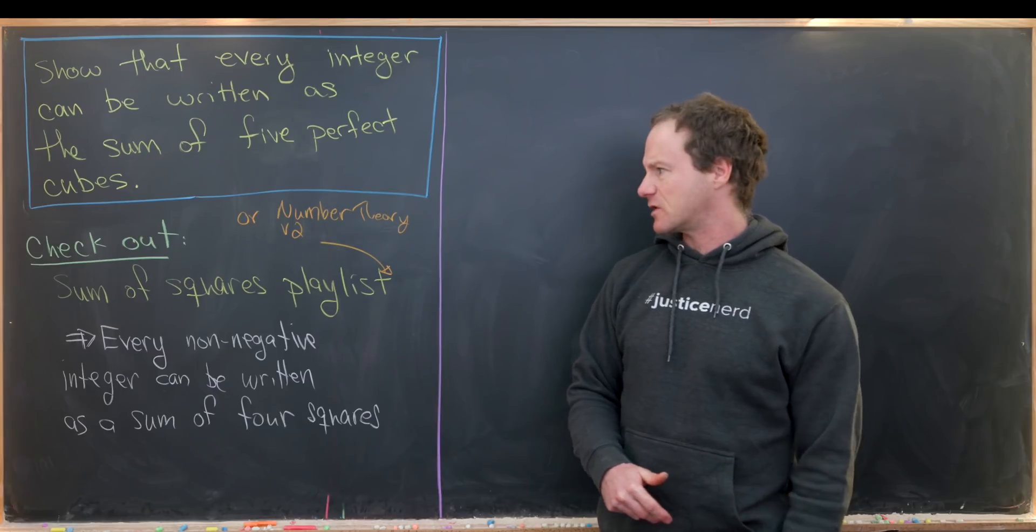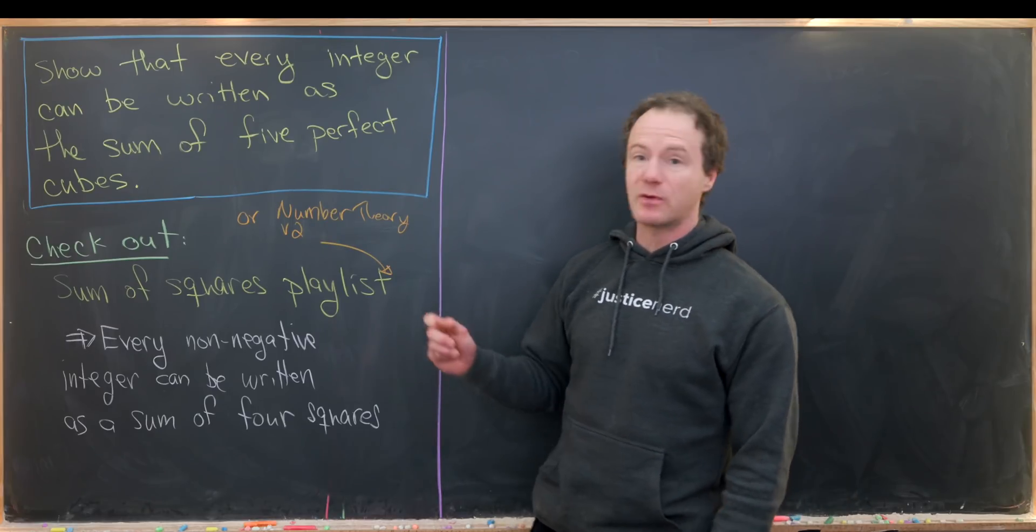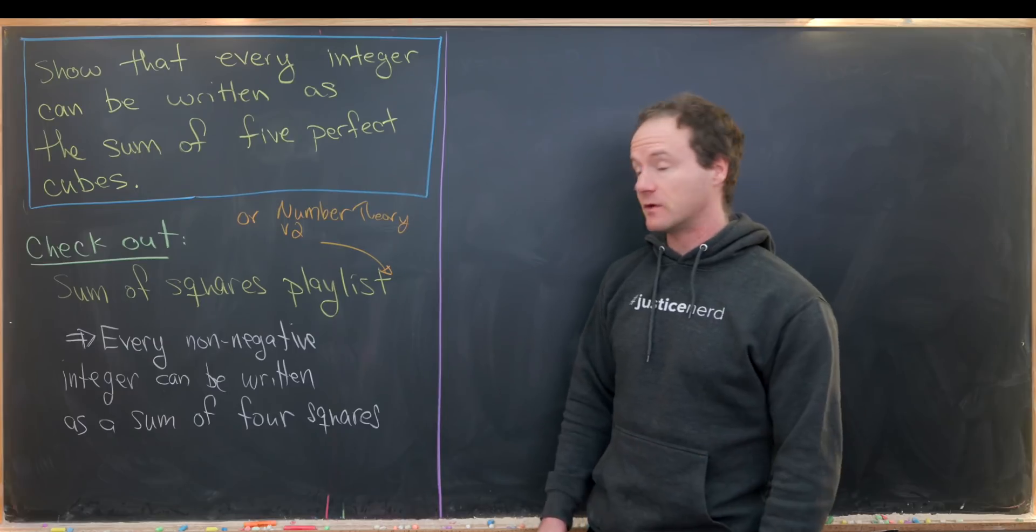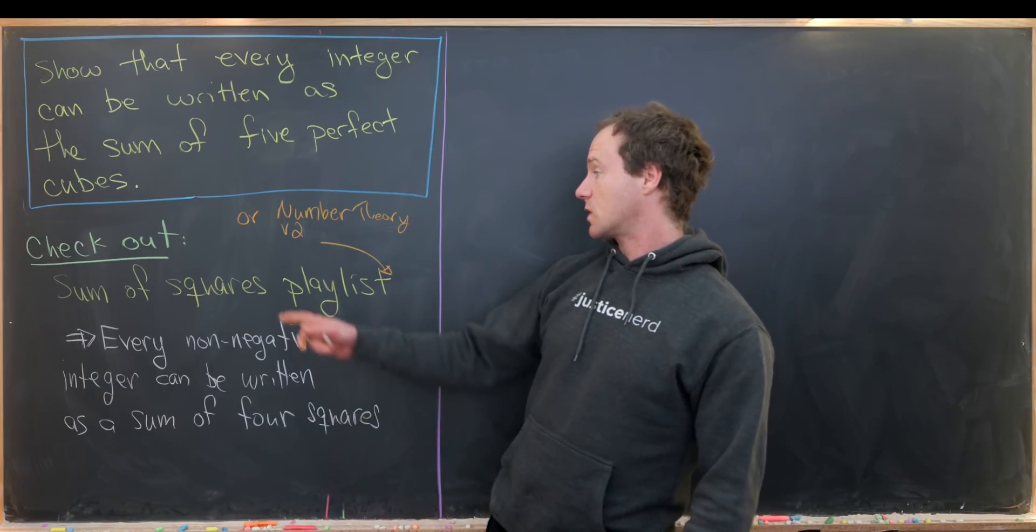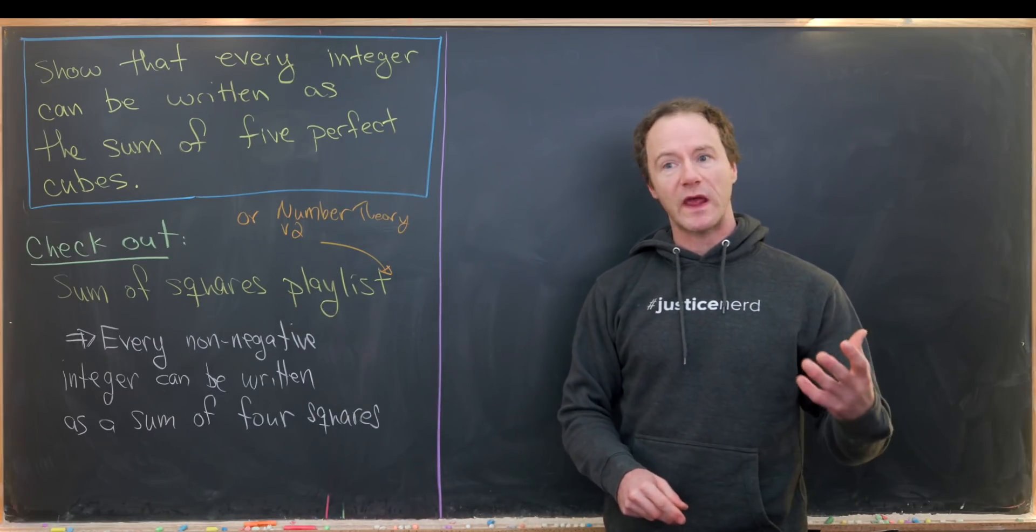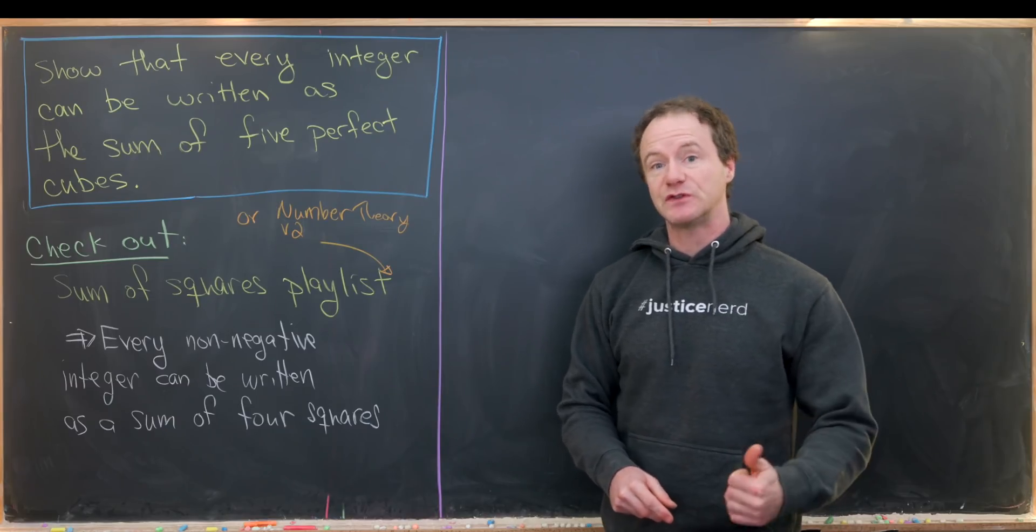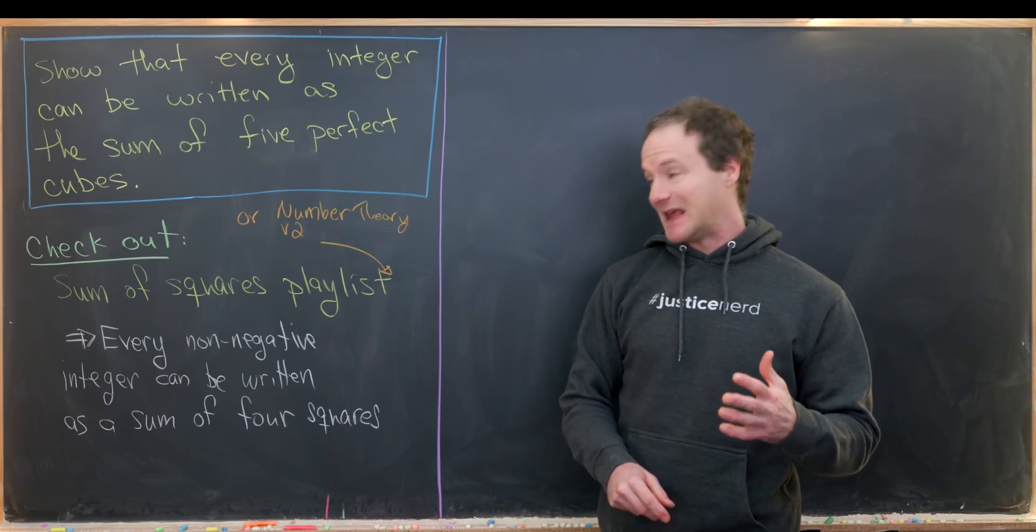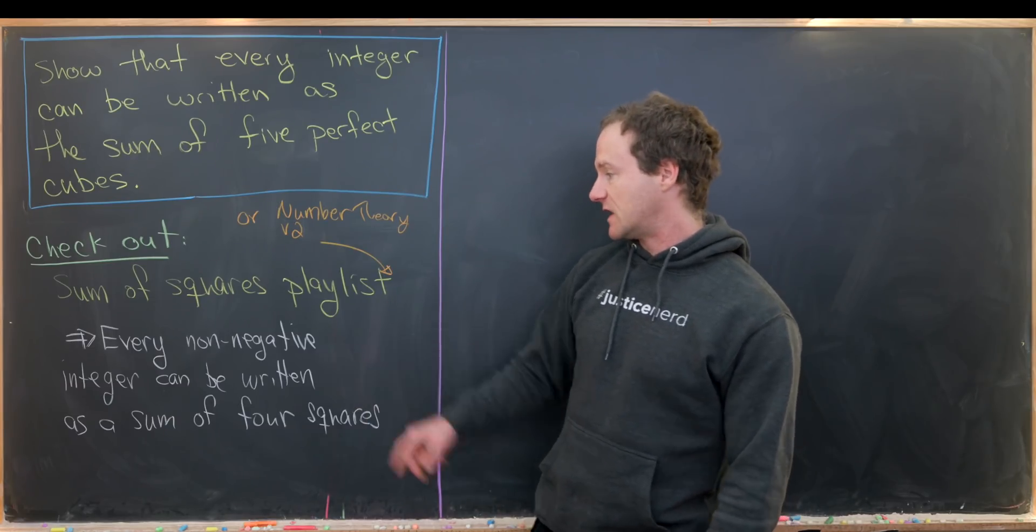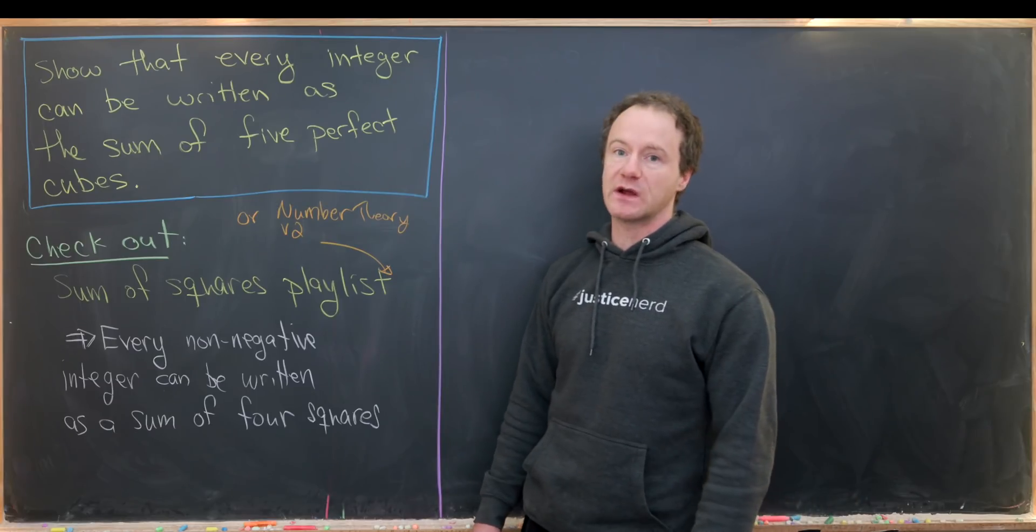This is fairly similar to something I did in my number theory course the first time around, where I explored sums of squares and showed when a number can be written as a sum of two squares, three squares, ending by showing that every non-negative integer can be written as the sum of four squares.